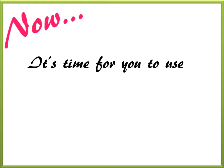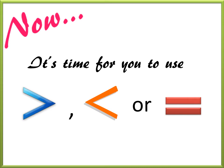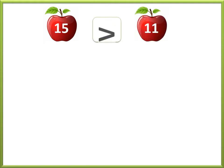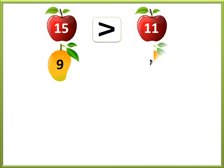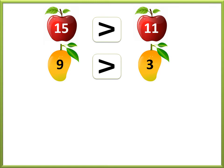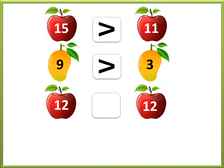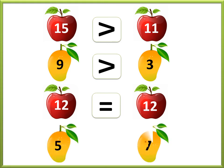Now it's time for you to use greater than, less than, or equal to. Fifteen. Eleven. We use the greater than sign because fifteen is greater than eleven. Seven. Nine. Three. We use the greater than sign because nine is greater than three. Twelve. Twelve. We use the equal to sign because we have the same number. Five. Seven. We use the less than sign because five is less than seven.